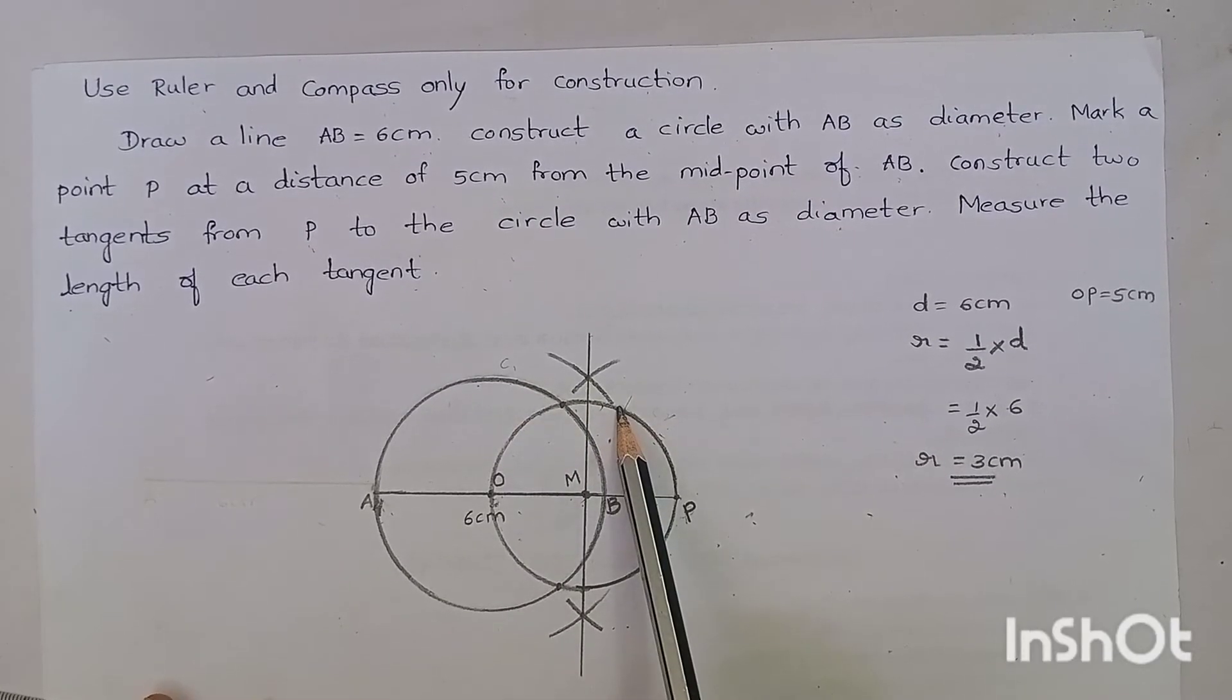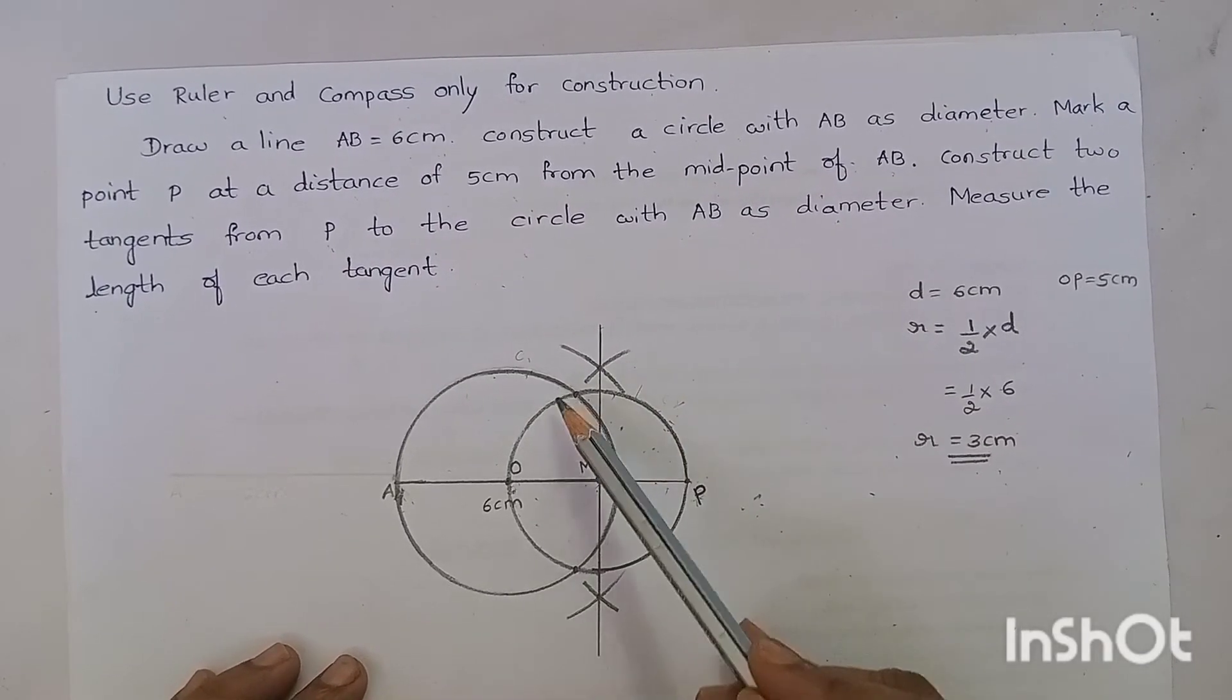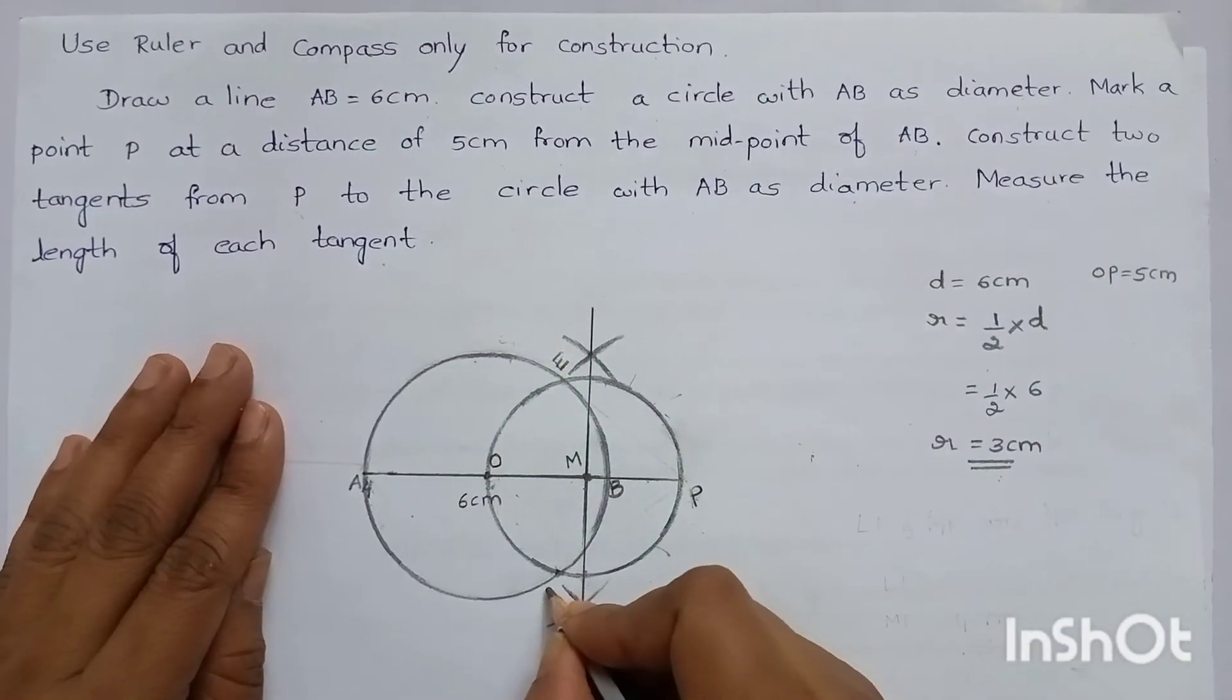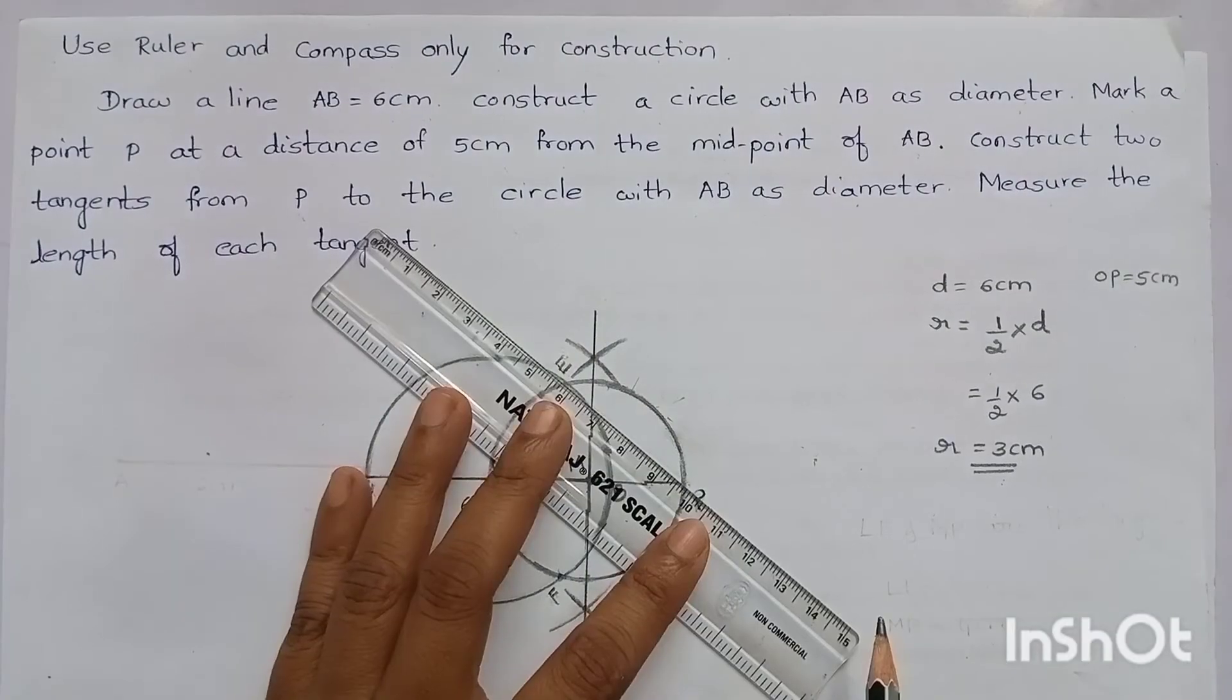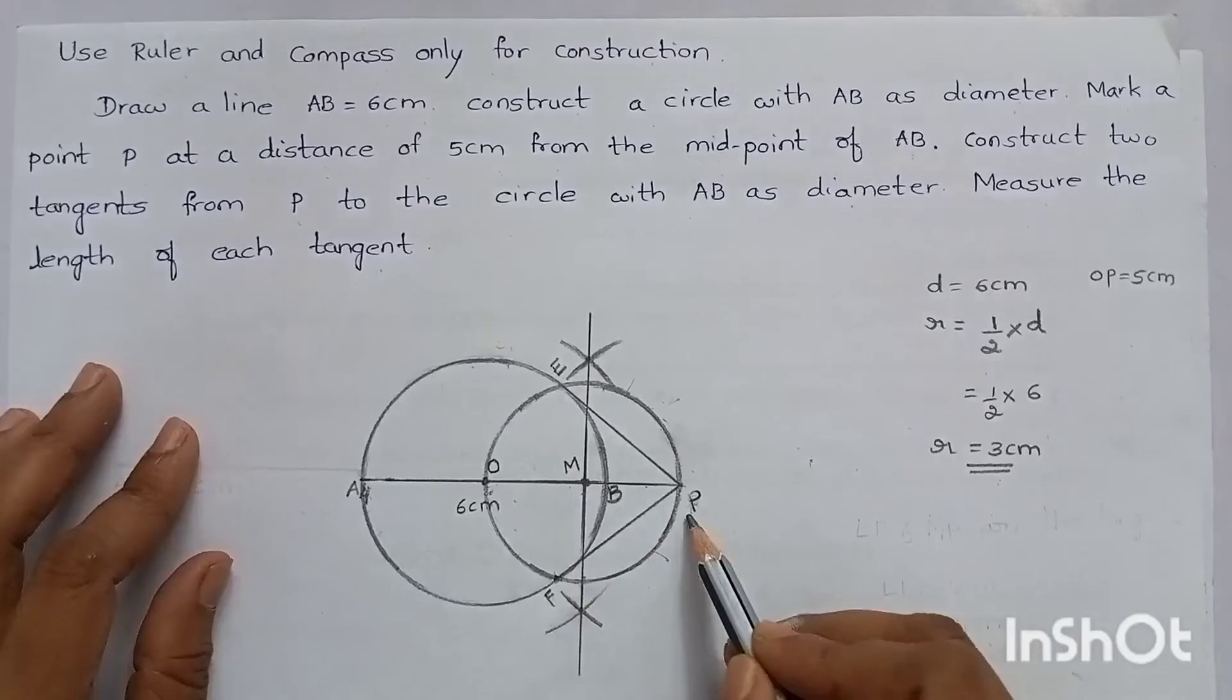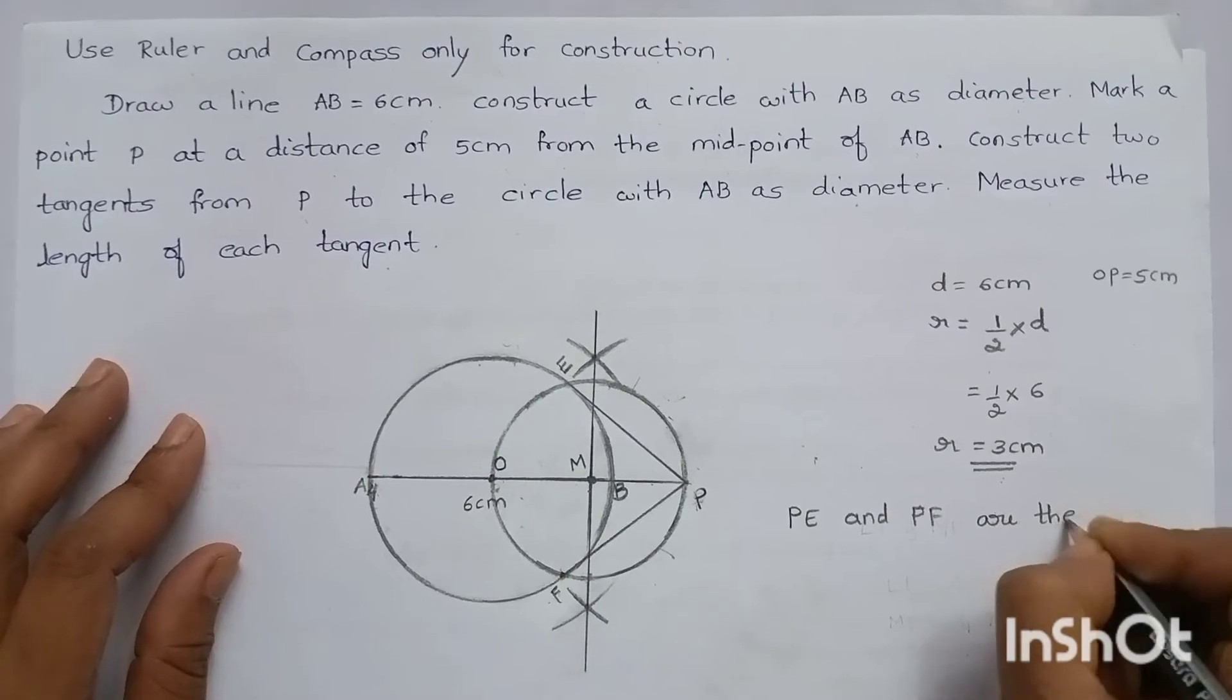And we are constructing a tangent to the first circle. And you can also notice that circle 2, it will cut the circle 1 at two points. Okay? Let me name it as E and F. Let's join PE and PF. PE and PF are the tangents.